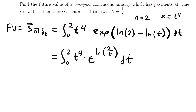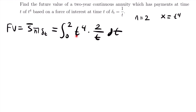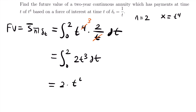Since e and the natural log cancel each other out — e^(ln(x)) equals x — we have e^(ln(2/t)) equals 2/t. So the integral becomes the integral from 0 to 2 of t⁴ times 2/t dt. The t in the denominator cancels with one of the t's in t⁴, leaving t³. This simplifies to the integral from 0 to 2 of 2t³ dt — a much simpler integral.